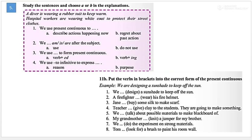Okay, please look at this. Study the sentences, choose A or B in the explanation. First one, a diver is wearing a rubber suit to keep warm. Second one, hospital workers are wearing white coats to protect their street clothes. We have to study these two sentences. First one, we use present continuous to, A, describe actions happening now, or B, regret about past action. Of course not B. A, describe actions happening now.